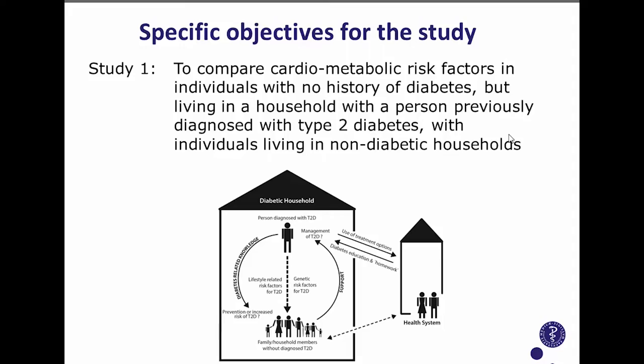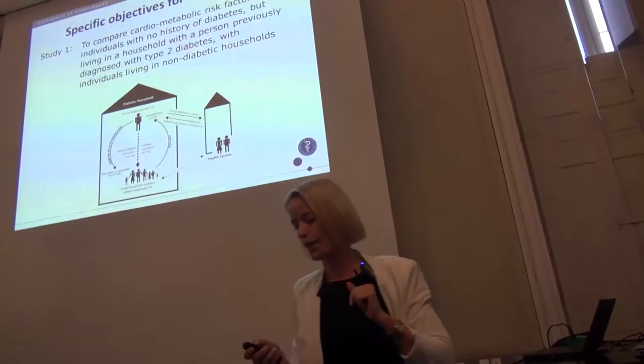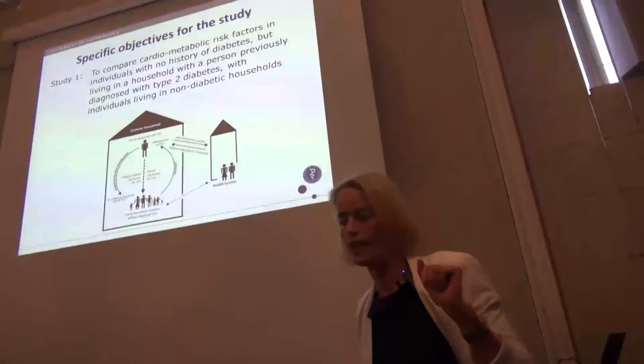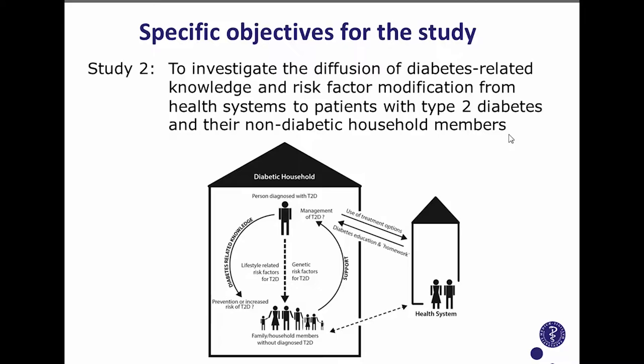We wanted to compare them to individuals living in a household where no one has been diagnosed with type 2 diabetes. In the second sub-study, we wanted to investigate the diffusion of diabetes-related knowledge and risk factor modification from the health system to the patient and on to the other household members. We looked specifically at household members — meaning those who lived in the same household as the person with type 2 diabetes.